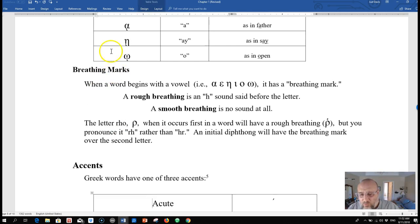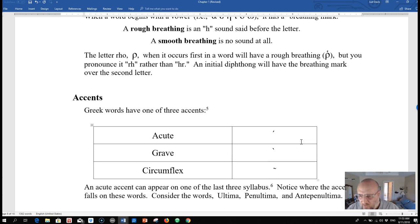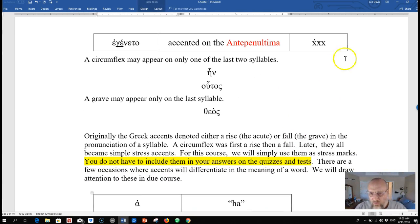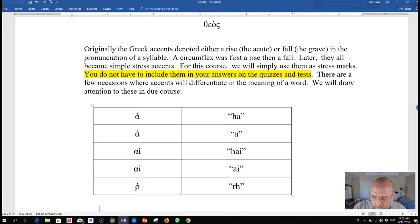So in terms of the new material today, we'll look at these breathing marks. When a word begins with a vowel - alpha, epsilon, eta, iota, omicron, or omega - if it begins with any of those, it will have a breathing mark. And there are two breathing marks: a rough breathing is an H sound, a smooth breathing is no sound at all. So I should put this material in - I have it slightly out of order but let me see. Yes, so if we look at this...